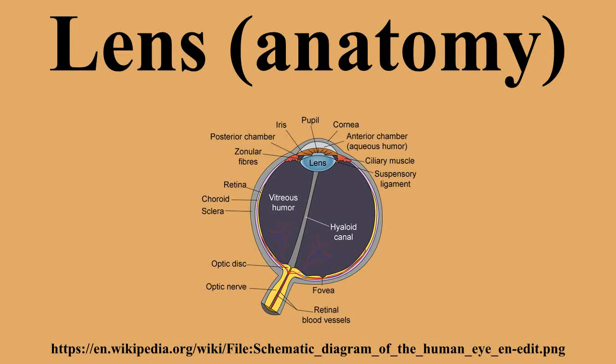The lens fibers form the bulk of the lens. They are long, thin, transparent cells, firmly packed, with diameters typically 4–7 micrometers and lengths of up to 12 millimeters. The lens fibers stretch lengthwise from the posterior to the anterior poles and, when cut horizontally, are arranged in concentric layers rather like the layers of an onion. If cut along the equator, it appears as a honeycomb. The middle of each fiber lies on the equator. These tightly packed layers of lens fibers are referred to as laminae.